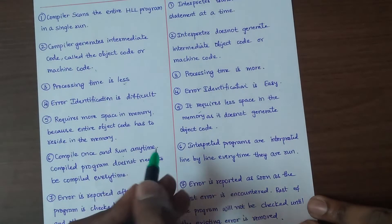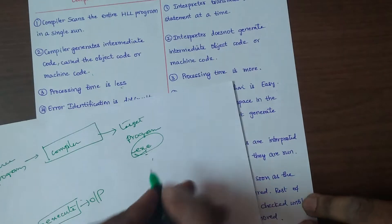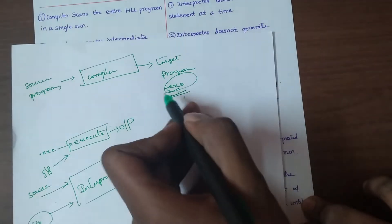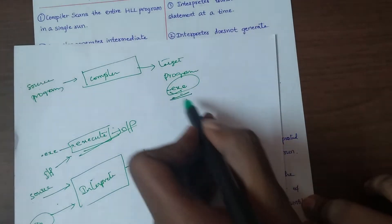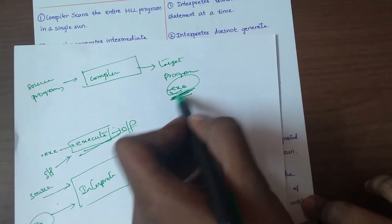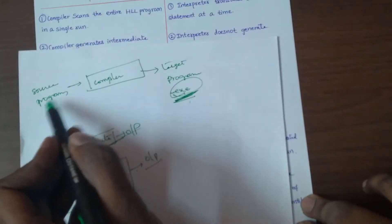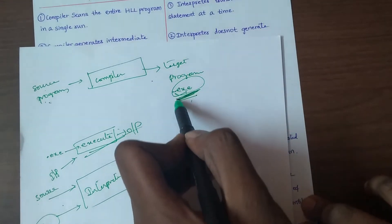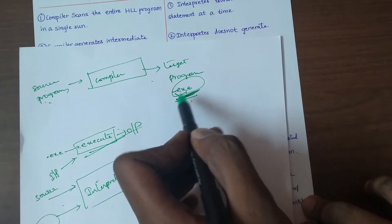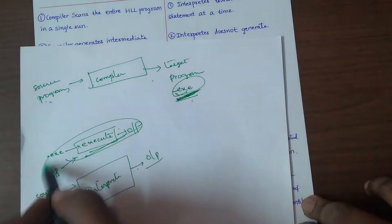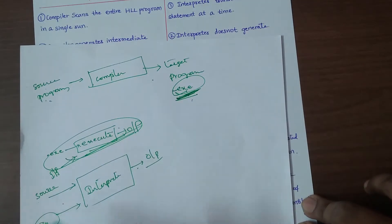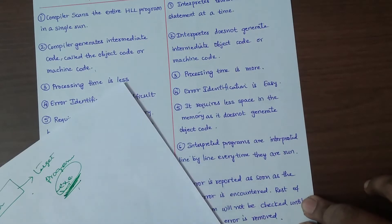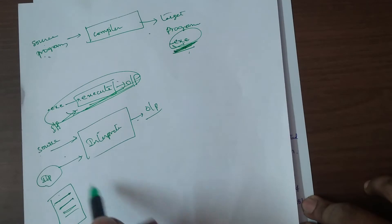Point 6: With a compiler, you compile once and run any time. Once you prepare the executable file by compiling the source program, you can execute it whenever needed without recompiling.